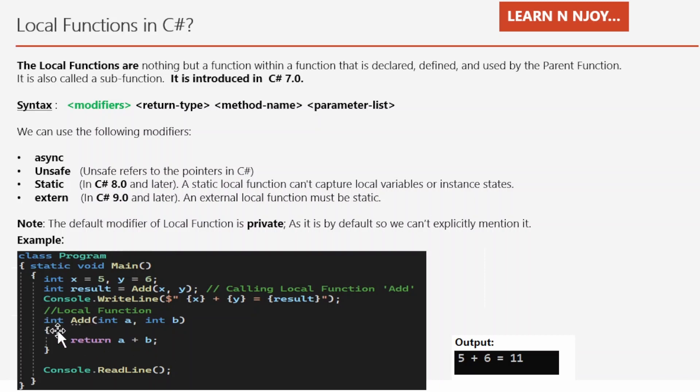The function is int Add(int a, int b), which performs an addition operation and returns the result as an int data type. So basically, if you see the syntax, first we're writing the return type, then method name, then parameter list. Here I have not mentioned any modifier, so the private modifier will get applied.